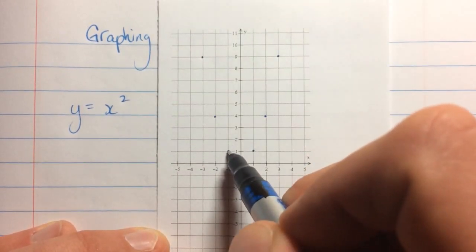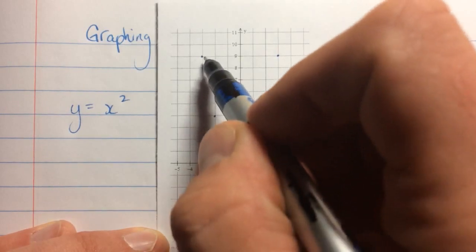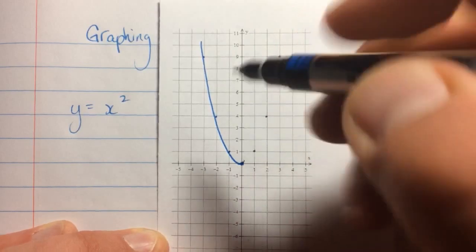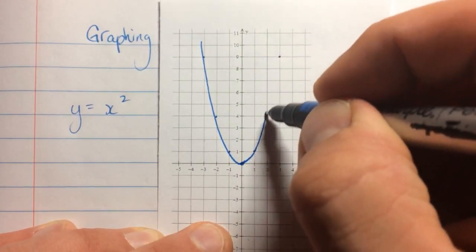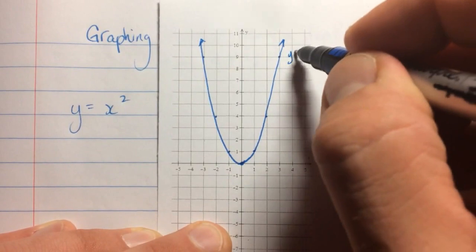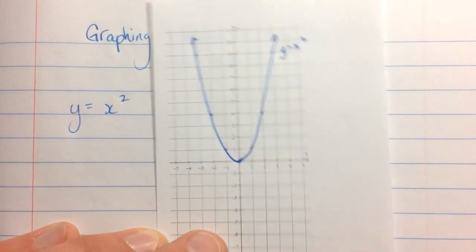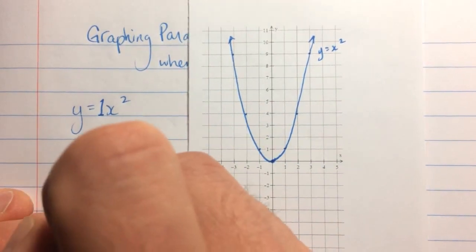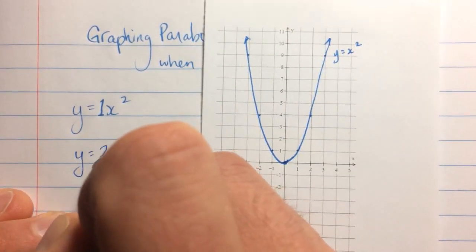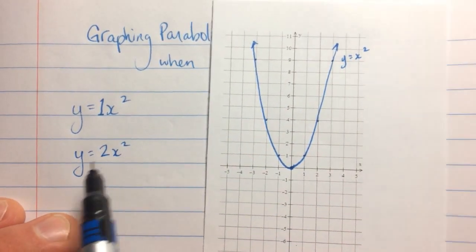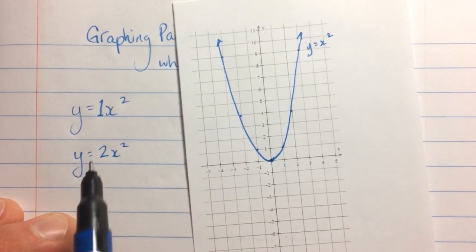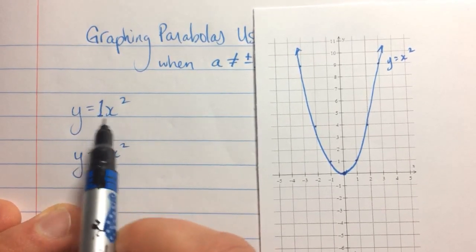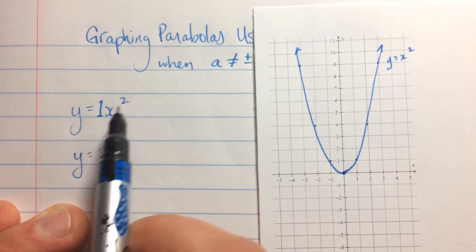So over 1, up 1, over 1, up 3, over 1, up 5. This gives us our general shape, and we connect the dots. That is the graph of y equals x-squared. Now what happens if we make a modification — instead of having this understood 1, what if instead it was a different number, like 2?